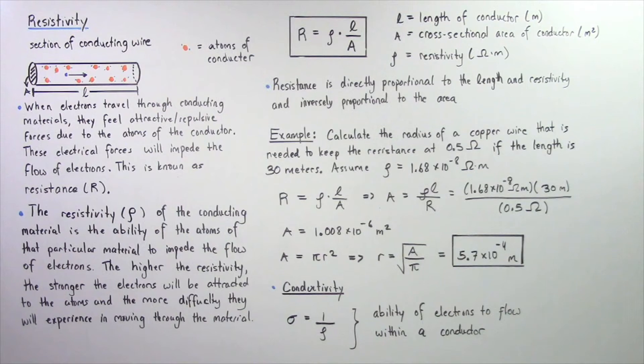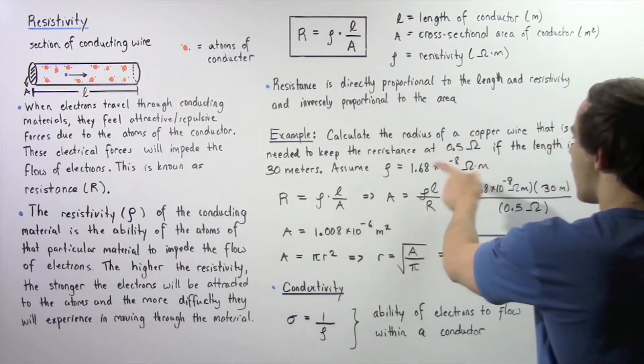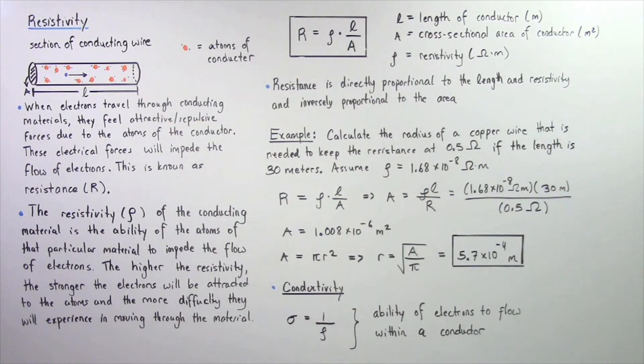Calculate the radius of a copper wire that is needed to keep the resistance at 0.5 ohms if the length of the wire is 30 meters. Assume that our resistivity of the copper is 1.68 × 10⁻⁸ omega-meters.